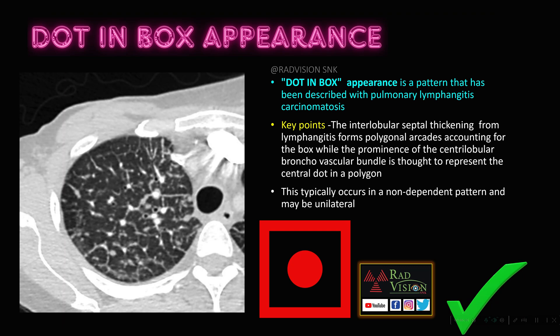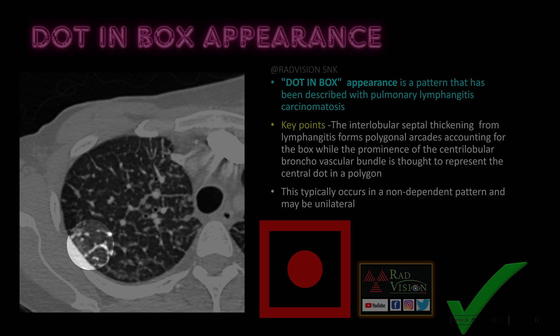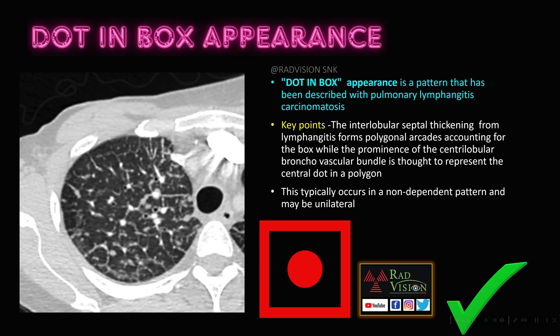Next, what is the dot in box appearance? The dot in box appearance is classically seen in pulmonary lymphangitis carcinomatosis, where the interlobular septal thickening mimics the box and the central bronchovascular bundle mimics the dot. Remember: dot in box appearance in lymphangitis carcinomatosis, which typically occurs in the non-dependent part and may be unilateral.